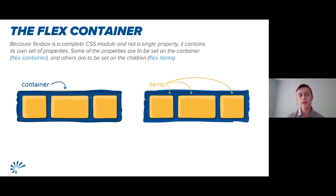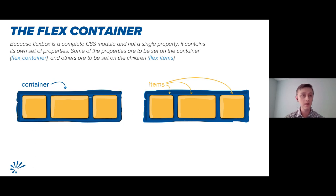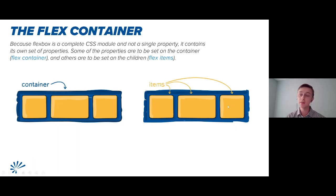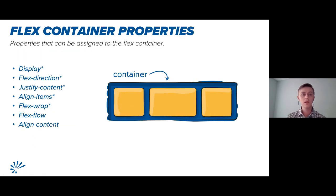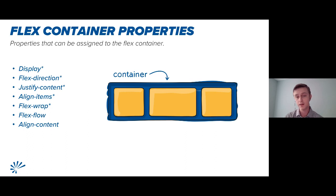Now we'll cover the flex container. Because Flexbox is a complete CSS module and not just a single property, it contains its own set of properties. Some properties are set on the container — also known as the flex container — and others are set on the children of that container, known as flex items. Here we have the container in blue and the flex items in yellow. The flex container properties we're going to cover are: display, flex-direction, justify-content, align-items, flex-wrap, flex-flow, and align-content.